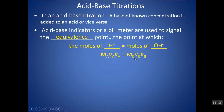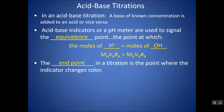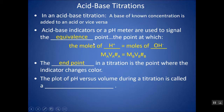Moles of OH⁻ equals molarity of base × volume of base × number of OH⁻ in that base. For example, calcium hydroxide has two OH⁻, so you'd multiply by two. The end point is when the indicator changes color; the equivalence point is when all H⁺ is neutralized by OH⁻. These are two different definitions — you want the end point to occur near the equivalence point.